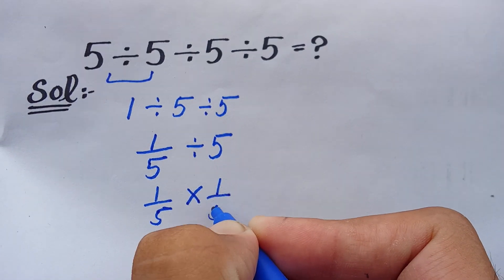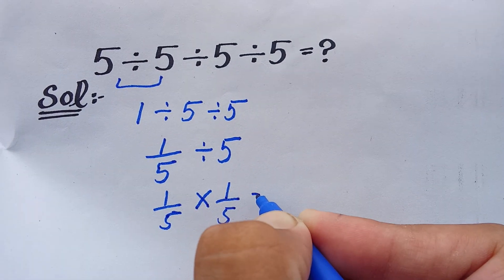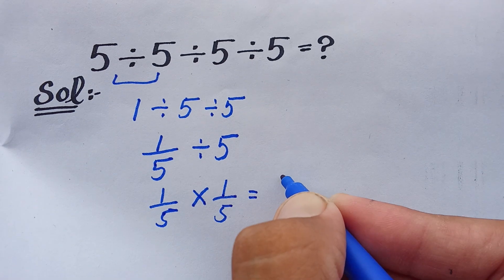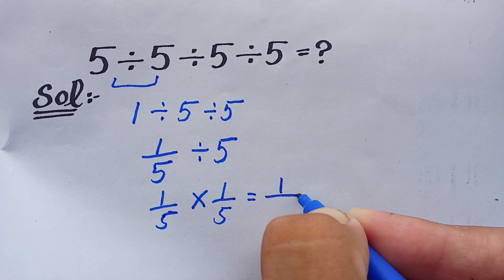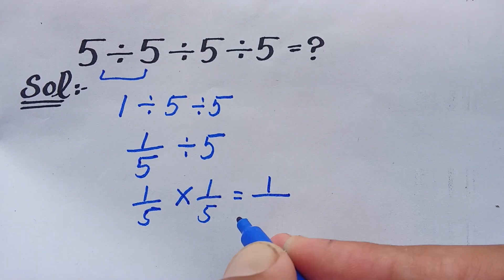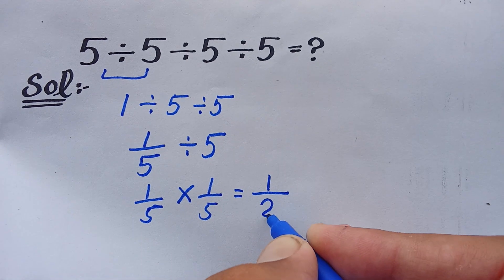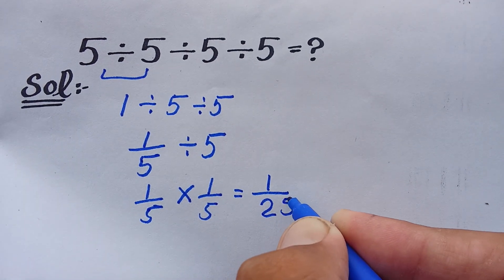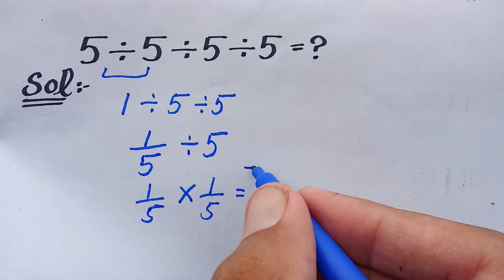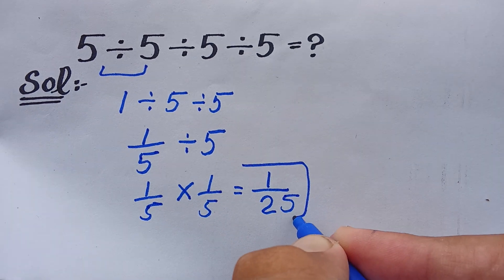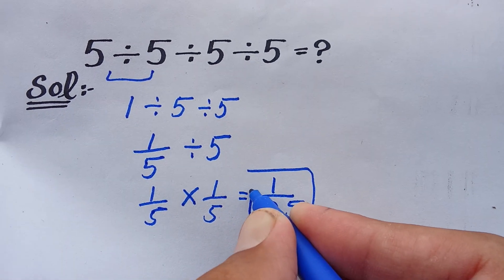Is equal to 1 multiply 1 is equal to 1 divided by 5 multiply 5 is 25. So this is our final answer of this expression. I hope you all understand this method.